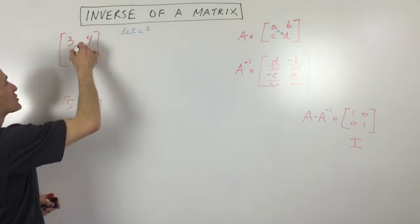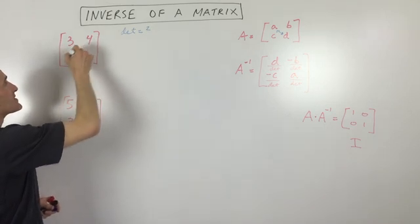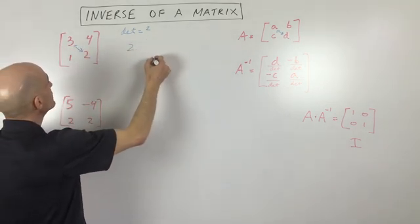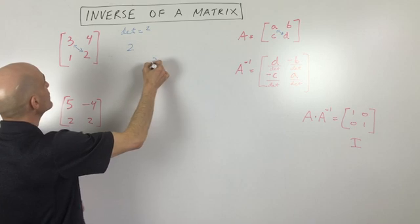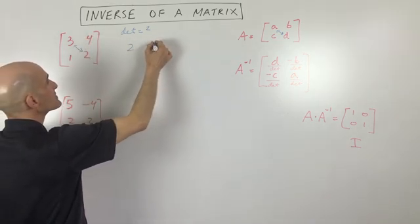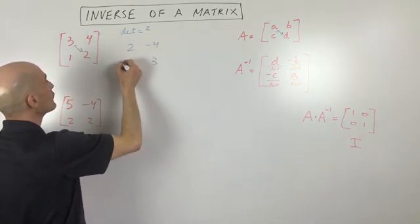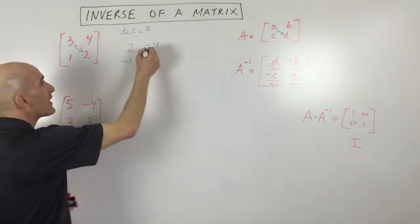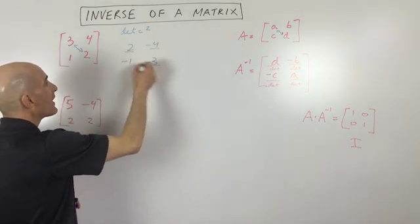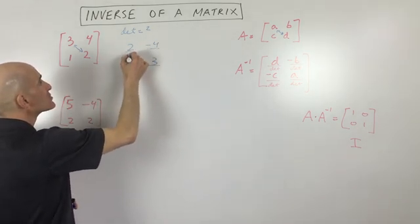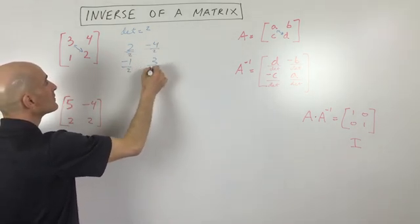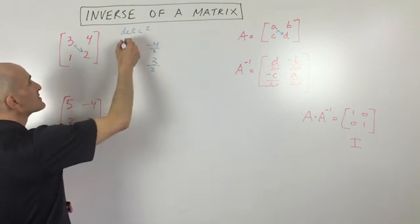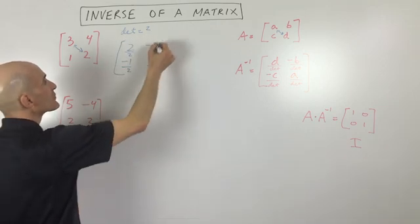Now I'm going to switch the elements on the diagonal, so I'm going to put two here and three here. I'm going to make the B and C the opposite, so that's negative four and negative one. We want to divide all the elements by the determinant, which is two. And you can see that this is going to be our inverse matrix.